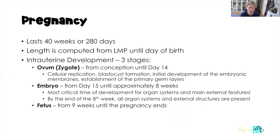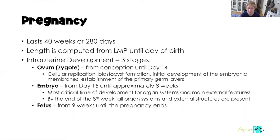All of our organs, blood cells, blood vessels, bones, and muscles come from one of those primary germ layers. Then we move into the embryo stage, which is day 15 until about eight weeks. This is the most critical time for organ development. All organ systems and main external features are developing in this embryo stage, so this is when the pregnancy is most at risk from teratogens. Teratogens can be harmful substances from the environment, things the mom ingests, or even therapeutic medications that have been prescribed to the mom but could cause damage to the pregnancy.